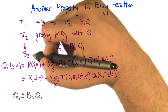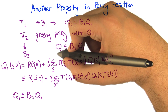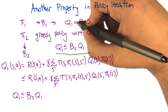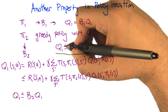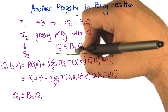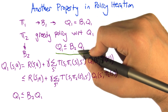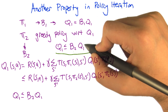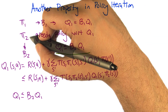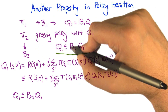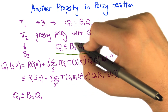Let B2 be the operator associated with Pi2. The thing we want to show is that Q1 — the Q function from solving for the fixed point of Pi1, i.e., the value function for Pi1 — is less than or equal to B2 applied to Q1. So if we take whatever we end up with after solving for the value function for Pi1, then take Pi2's greedy policy and do one Bellman backup with respect to that, we get a value function that dominates Q1.